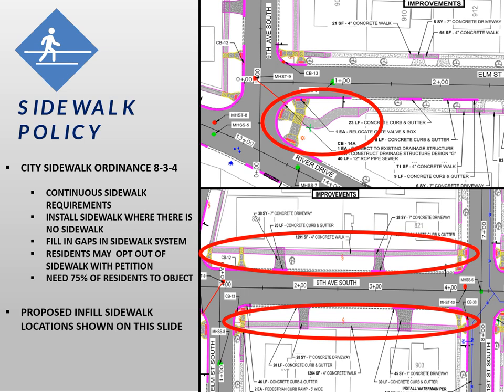In addition, it's proposed to install sidewalk on both sides of 9th Avenue South between Elm and 1st Street South. Per city policy, since no sidewalk currently exists, it's proposed to install sidewalk on both sides of the street, and we also had a homeowner request this work. Letters have not yet been sent out for this proposed infill, but homeowners will receive these shortly and will be able to petition against installation if opposed. Please make sure to reply to that letter so we get everyone's thoughts.